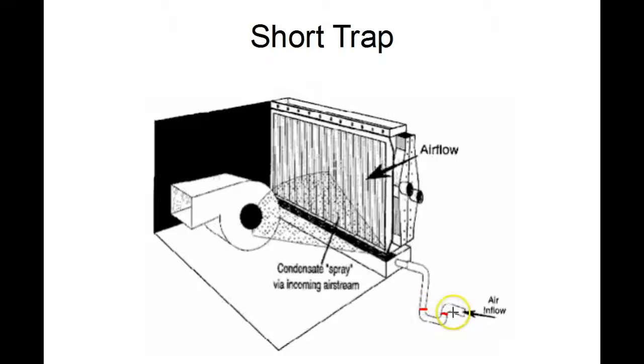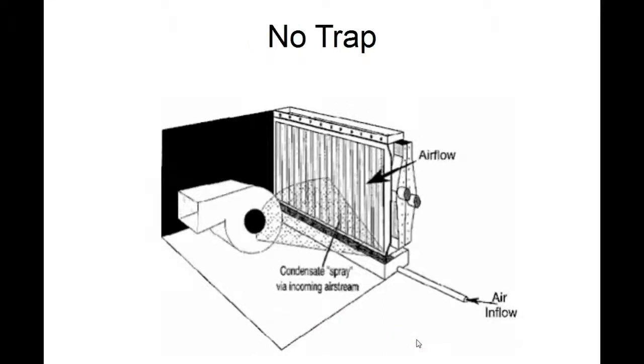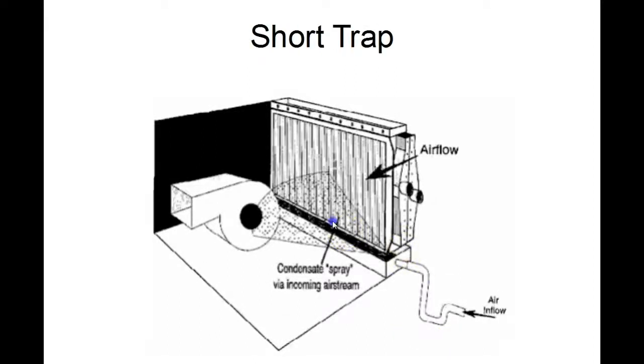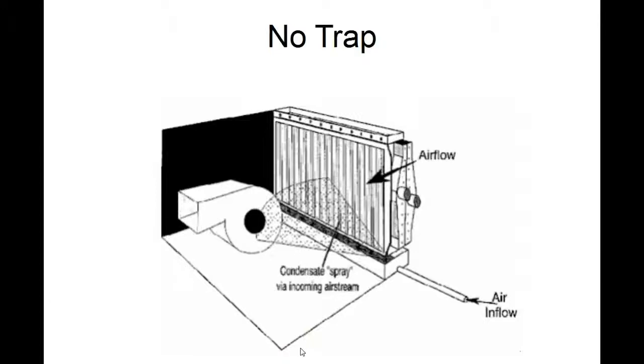When the unit starts up it will suck everything back up and the same thing happens with the short trap as with the no trap. You can see it creates the spray into the blower housing and into the ductwork. If the rise of this trap is shorter than the manufacturer's specifications for the unit, then it's exactly the same as not having a trap at all.